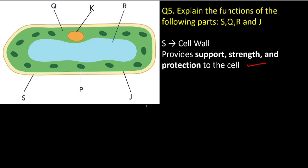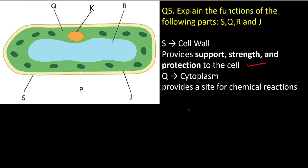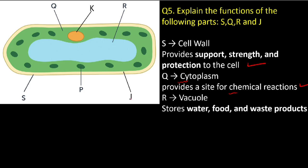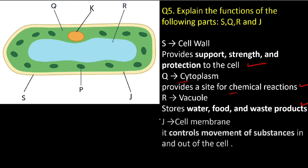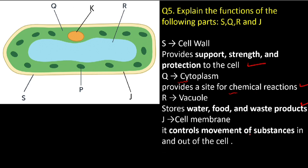What about Q? Q is the cytoplasm — cytoplasm provides a site for chemical reactions. What about R? R is the vacuole — the vacuole stores water, food, and waste products. And part J is the cell membrane. The function of the cell membrane is to control the movement of substances in and out of the cell.